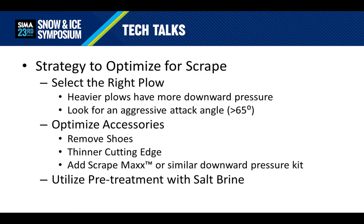Using a strategy that optimizes for scrape can be a great decision for your business. An important piece is selecting the right plow — heavier plows have more downward pressure. Look for an aggressive attack angle in the equipment you choose. Optimizing that equipment with the right accessories is also important. Removing shoes, finding thinner cutting edges, or adding accessories like ScrapeMax can be great additions. Finally, utilizing pretreatment with salt brine can be an excellent way to improve the overall scrape. By pretreating, the snow and ice doesn't adhere to the pavement, and you can clean the surface more effectively.